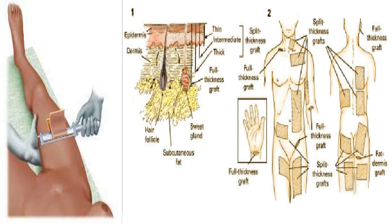Exposed bone, joint, tendon, blood vessels, and other significant structures are not good candidates for skin grafting and need other methods of reconstruction such as pedicle or free flaps. Active infection and poor blood supply to the recipient sites are contraindications. Weight-bearing is a relative contraindication for skin grafting, although full-thickness skin grafts can sometimes provide an adequate reconstruction.